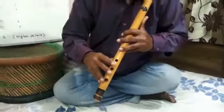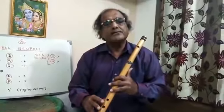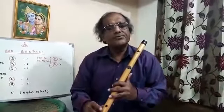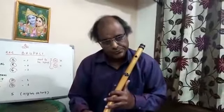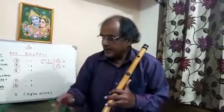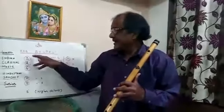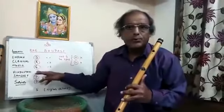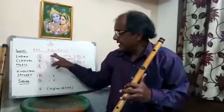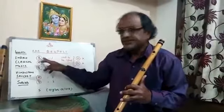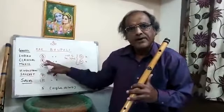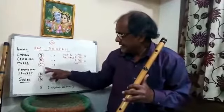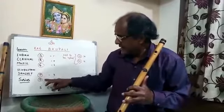This is our normal Sare Gama Padhanisa consisting of seven notes. Now I will play the Sargam of Rag Bhopali consisting of five notes: Sa, Re, Ga, Pa, Dha.